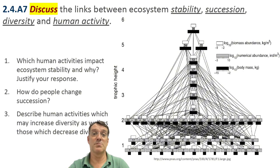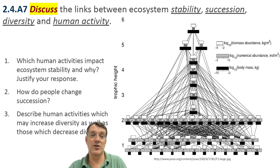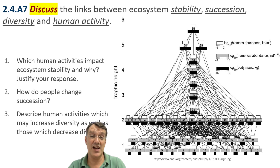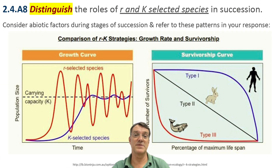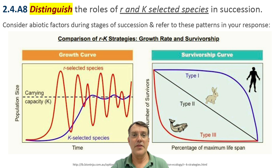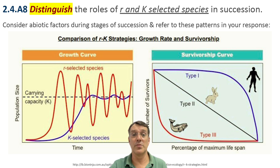There are important links between ecosystem stability, succession, diversity, and human activity. Human activities that reduce biodiversity often decrease ecosystem stability. Practices that interrupt succession, like frequent clearing, prevent ecosystems from developing the complex food webs that contribute to resilience. R-selected species, with their fast growth and high reproductive rates, dominate the early stages of succession — their ability to quickly colonize disturbed areas makes them effective pioneers. K-selected species, with slower growth and more competitive abilities, tend to dominate later succession stages and climax communities.